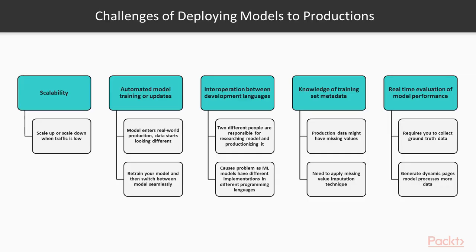Let's see the challenges of deploying models to production. The first challenge is scalability — your model should automatically scale up or out based on traffic, and then scale down or in when the traffic is low. The next challenge is automated model training or updates. Real world data has temporal dynamics, and as your model enters the production environment, the data starts looking different from what the model was originally trained on. This means you need to retrain your model and switch between models seamlessly.